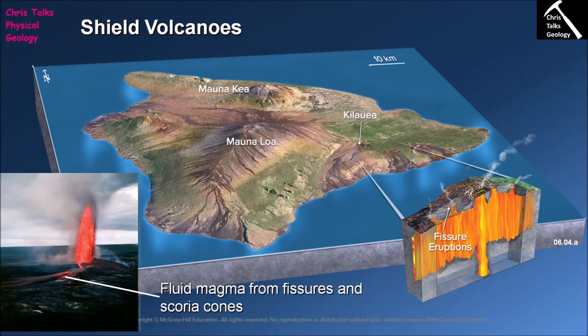Because the lava erupted from shield volcanoes is of a mafic composition, we know it's going to have a low viscosity, so it flows very easily. This means volcanic eruptions and the lava flows they produce will flow laterally over very large distances. We would therefore expect shield volcanoes to be very wide but not that high compared to their width — a shape like a shield, hence the name.